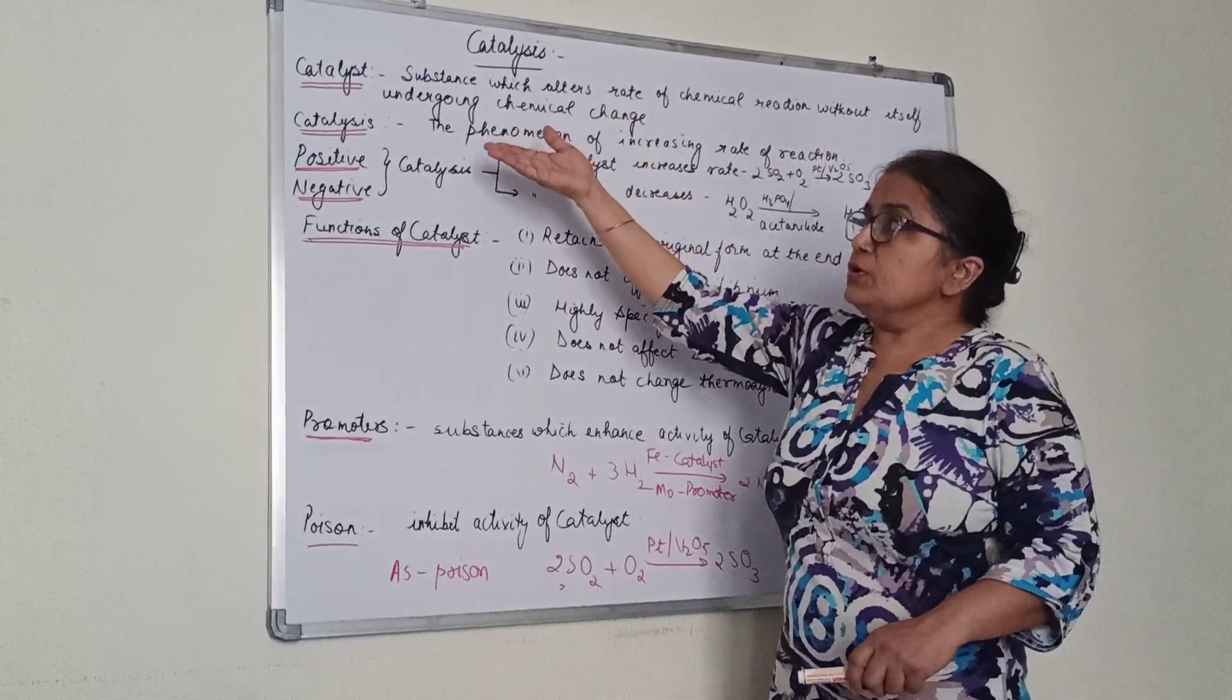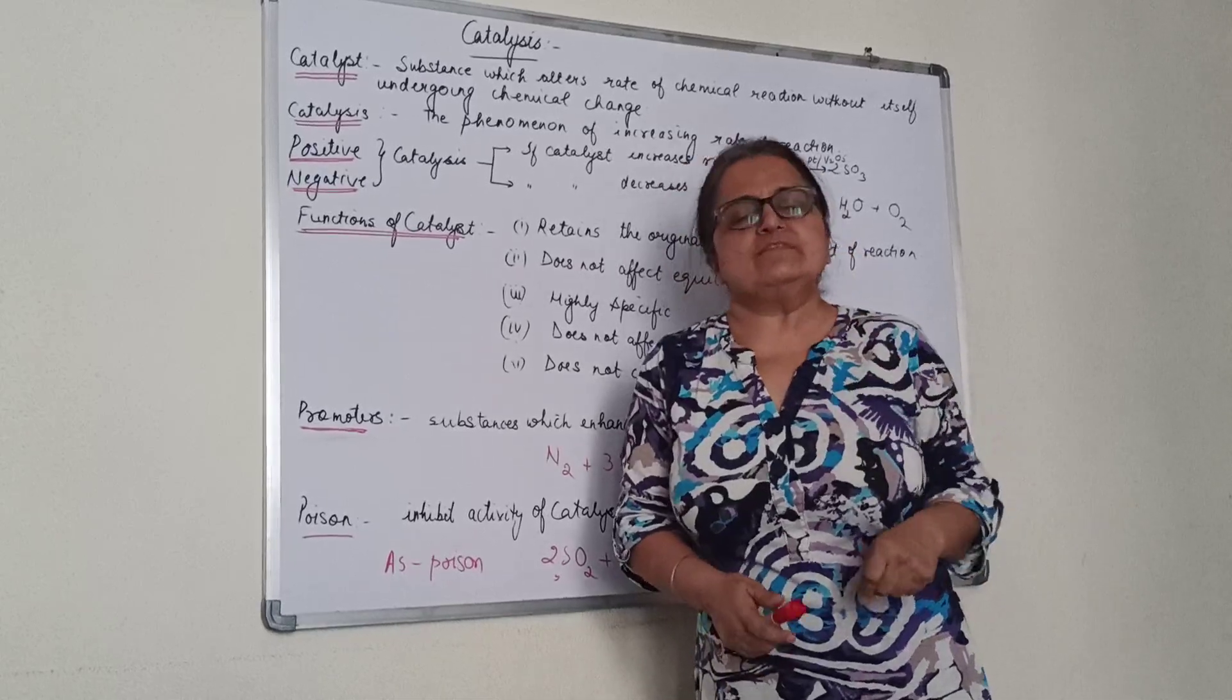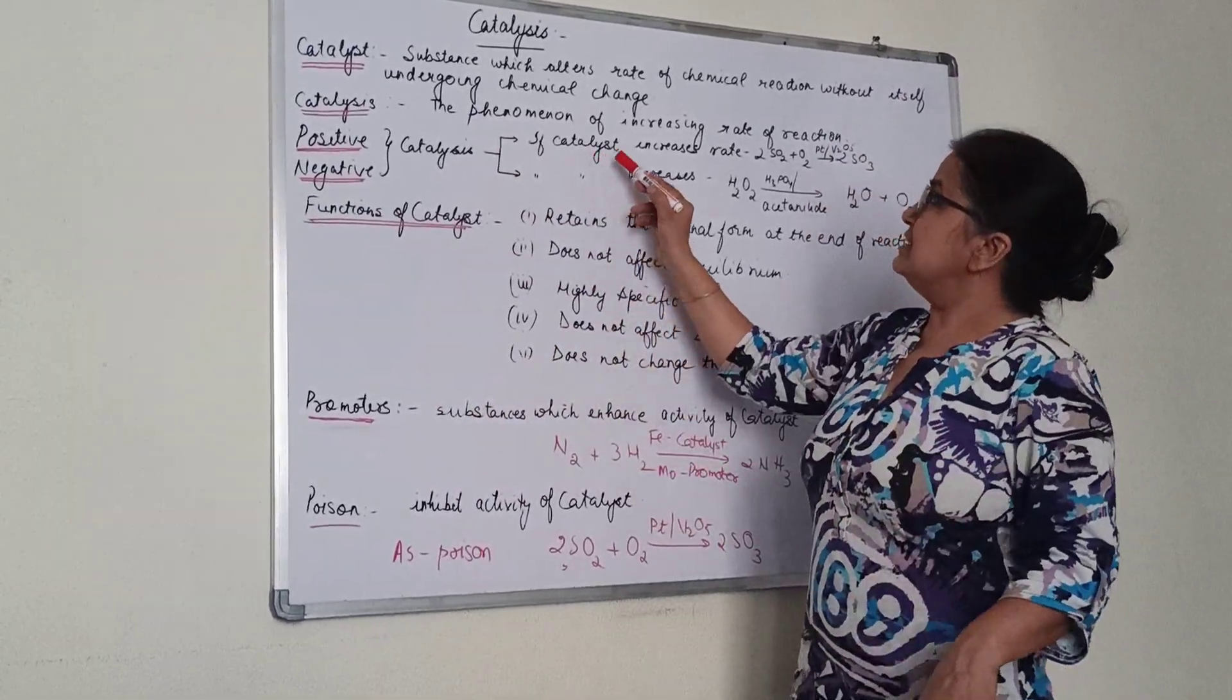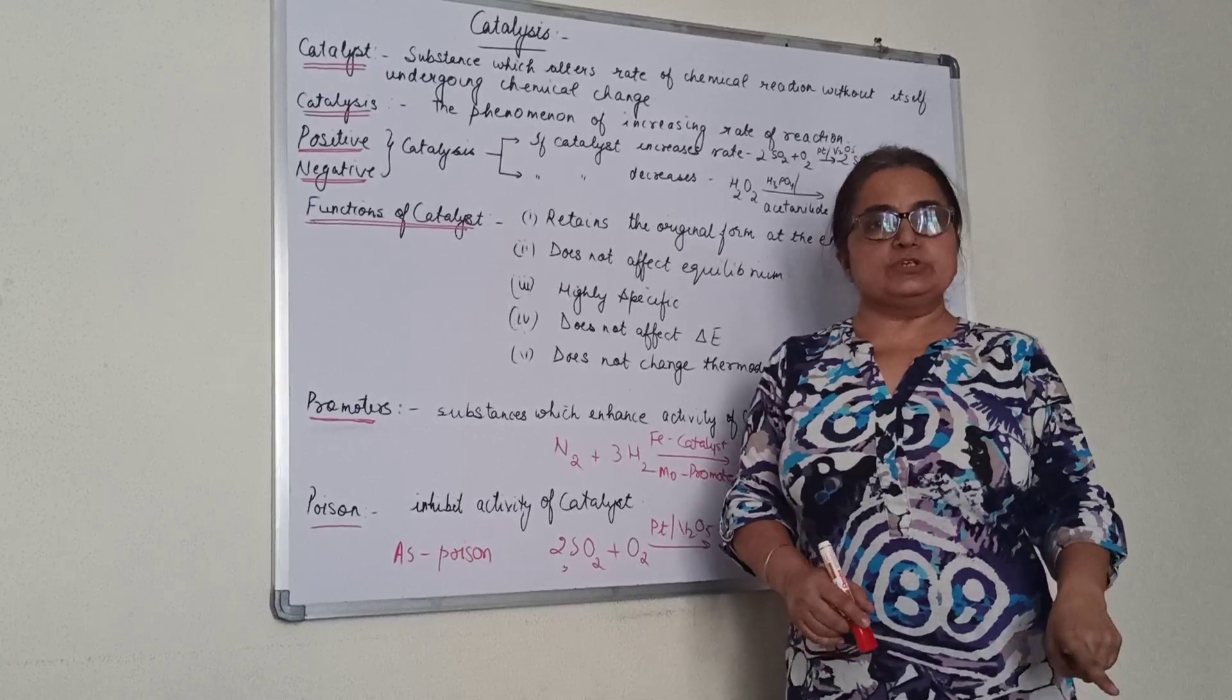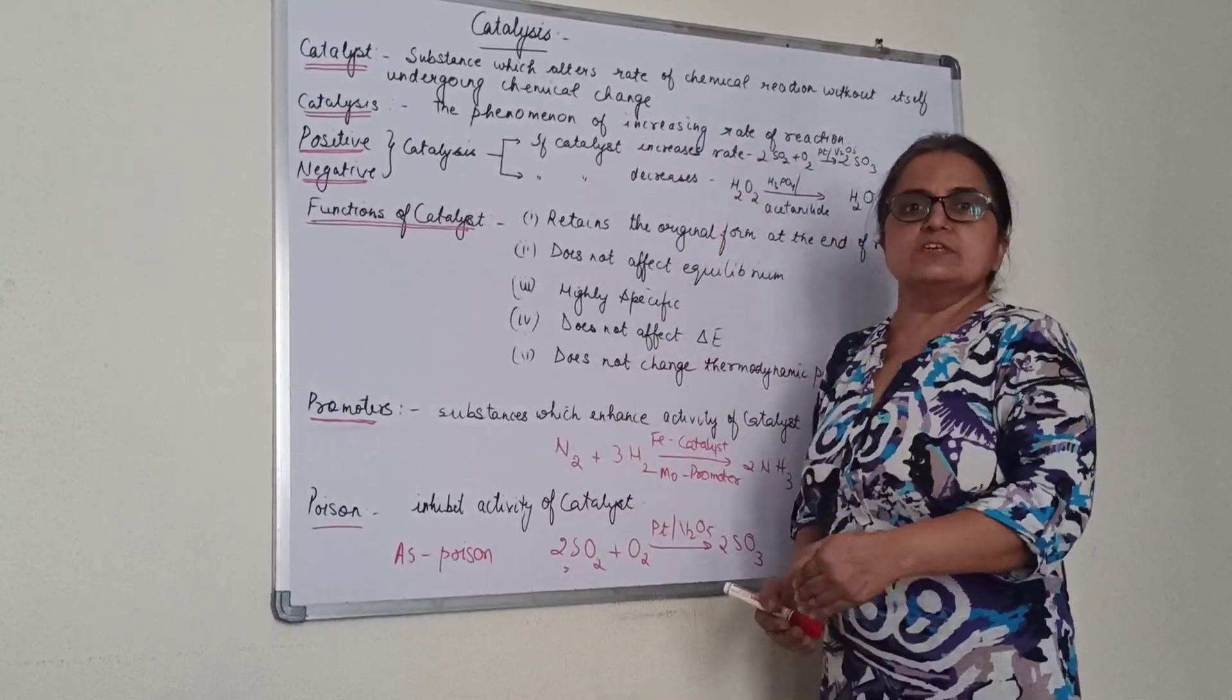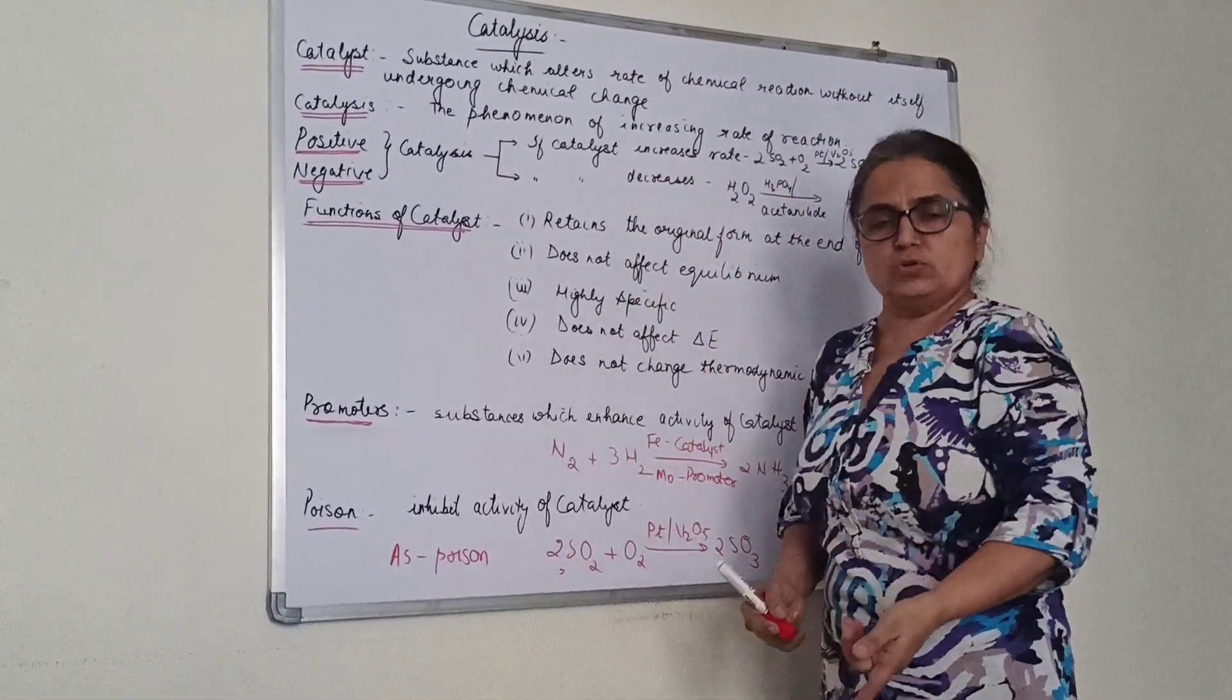The phenomenon by which the catalyst functions is called catalysis. Based on whether the catalyst increases or decreases the rate, it is called a positive or negative catalyst, and the mechanism is called positive or negative catalysis. A positive catalyst increases the rate of reaction by lowering the activation energy. As we discussed in chemical kinetics, using a positive catalyst lowers the activation energy required. A negative catalyst increases activation energy, thus lowering the reaction rate.